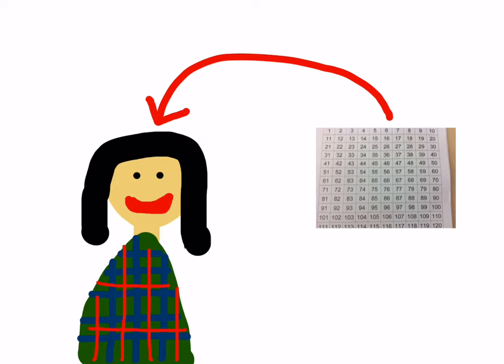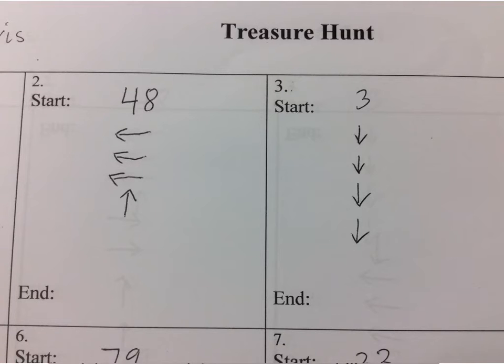The game we're going to do to work on this is called A Treasure Hunt. The way this works is we're going to pretend that there's a hidden treasure on a hundreds chart and this is a map to where you find the treasure.